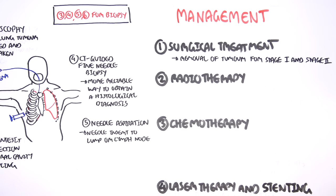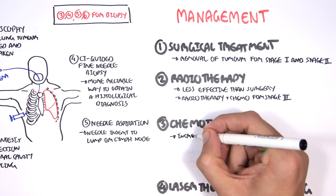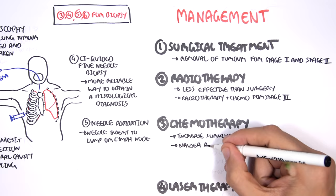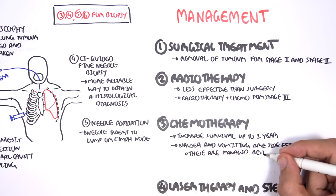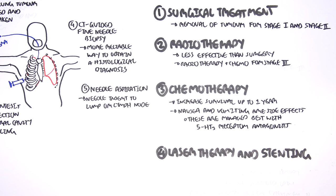Radiotherapy is less effective than surgery. However, radiotherapy is used in combination with chemotherapy for stage three. Chemotherapy increases survival up to one year. Nausea and vomiting are side effects. These side effects are managed best by 5-HT3 receptor antagonists because these drugs will target the chemoreceptor trigger zone, thus preventing the vomiting and nausea associated symptoms.